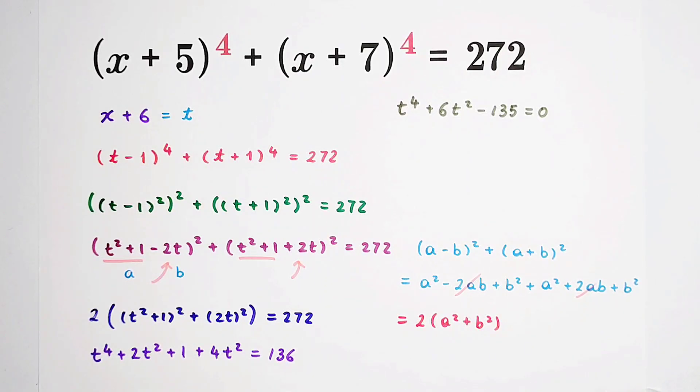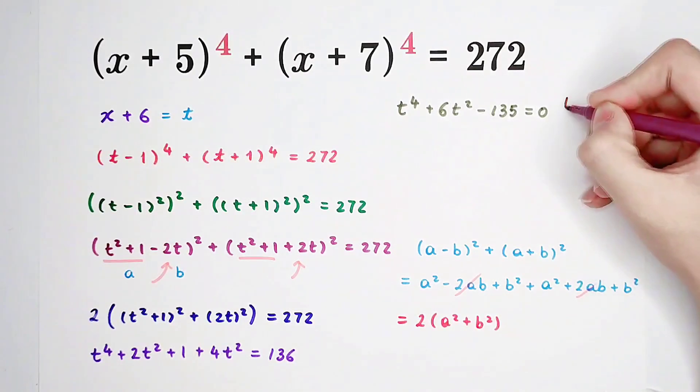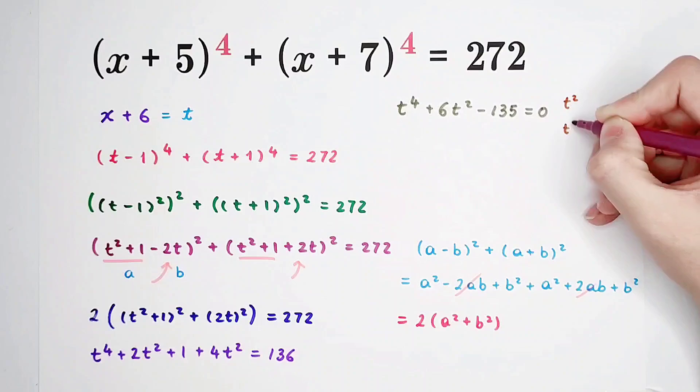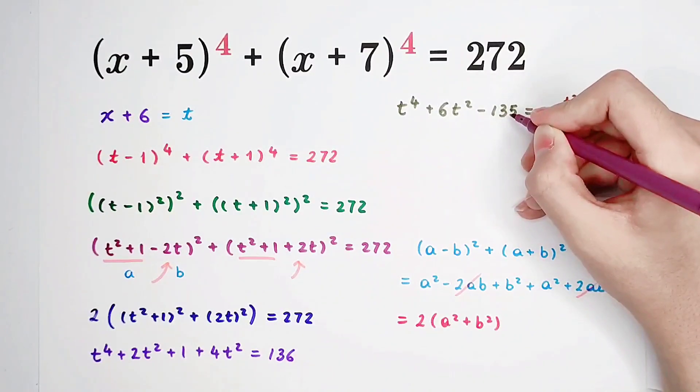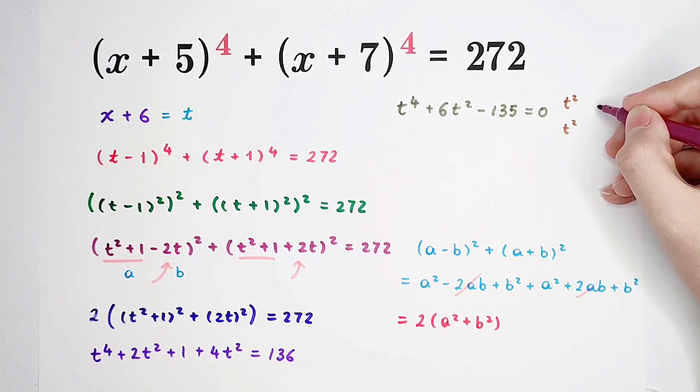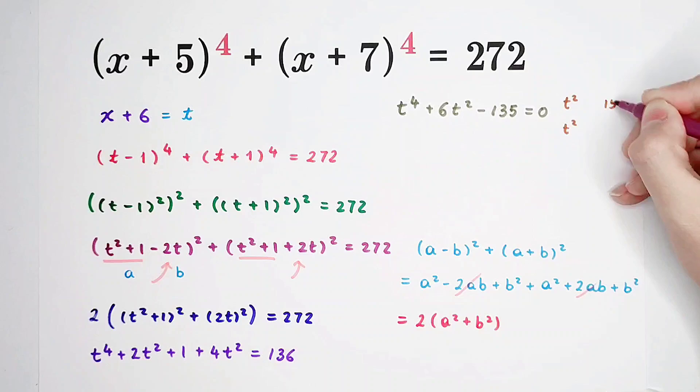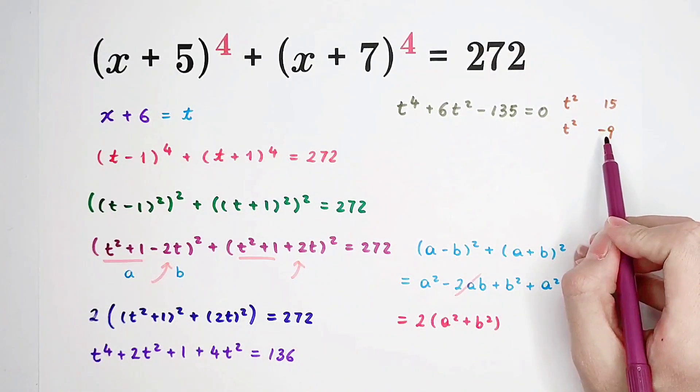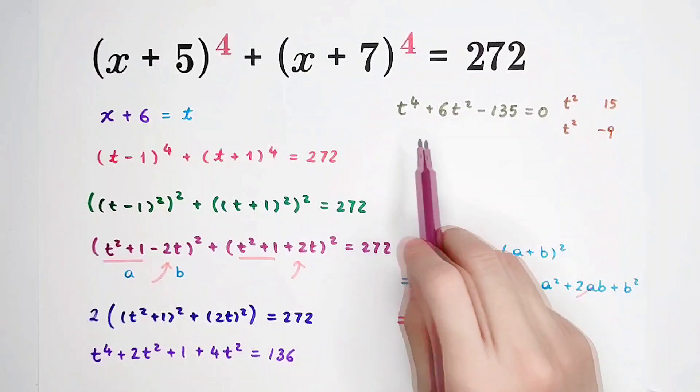And the left-hand side can be factorized. So t squared, you can recognize it is negative 15 times 9 or 15 times negative 9. 15 times negative 9 is good, because then negative 9 plus 15 is 6. Very good.